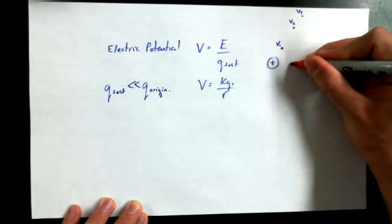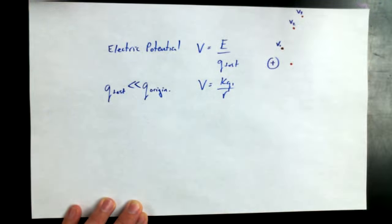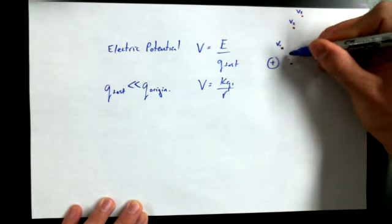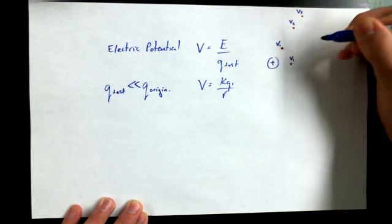What if I chose this point here to find my electric potential? What do you think might be true? Would it be the same as any other charge in the same radius? Yeah, so V1, same as V1.